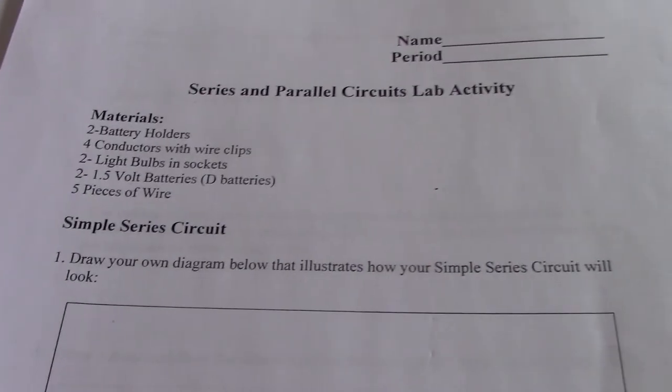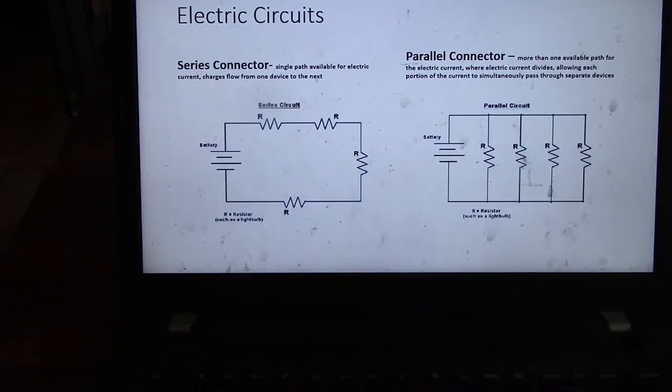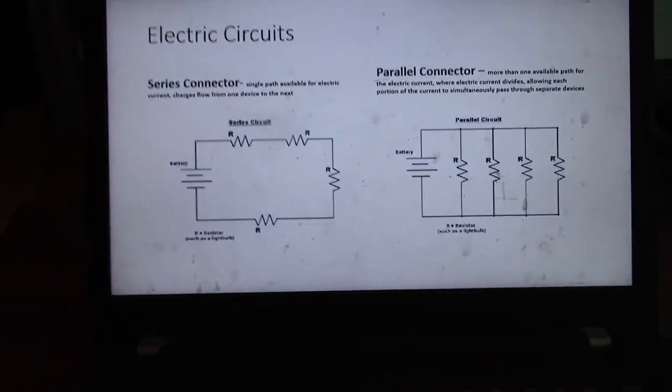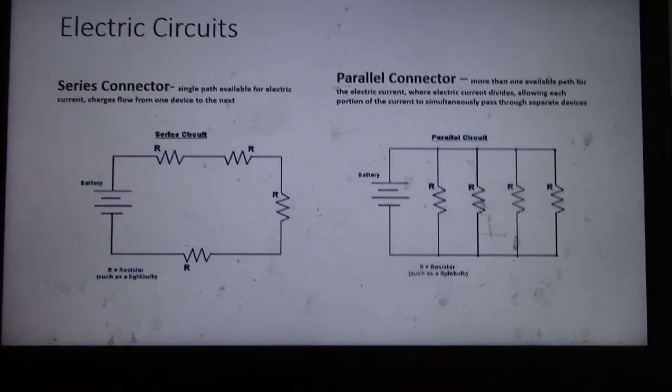Think about those concepts when you do this lab. If you add a pathway in parallel circuits, you'll overall increase voltage because resistance decreases. Current increases with more pathways in parallel; current stays the same in series circuits.